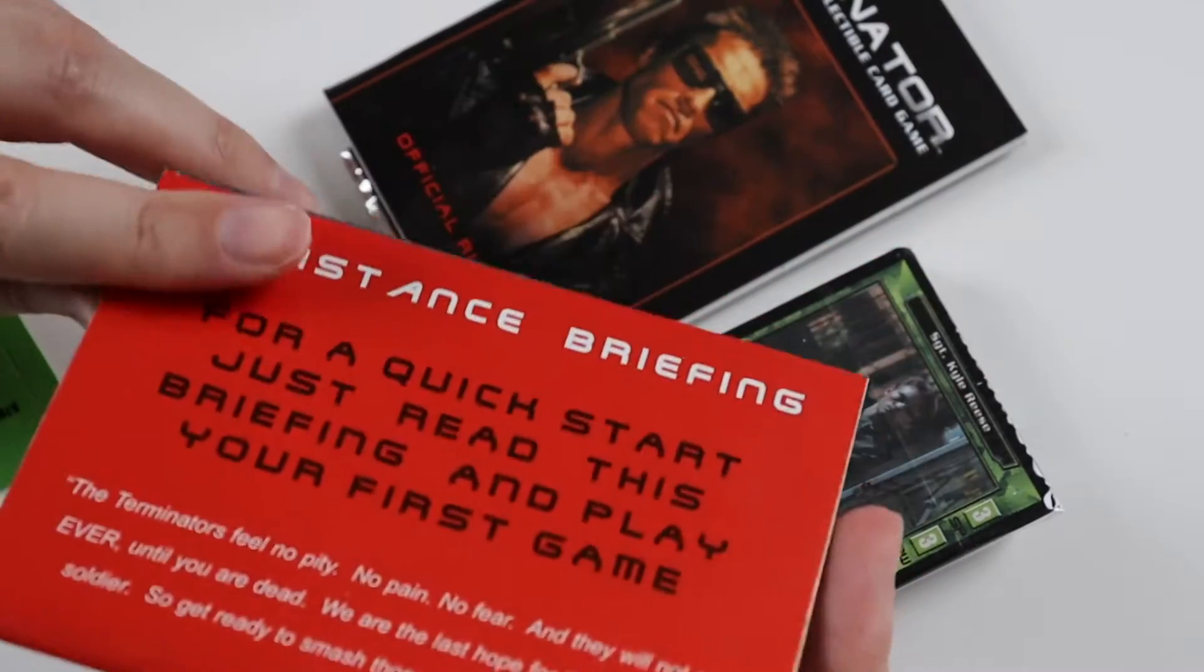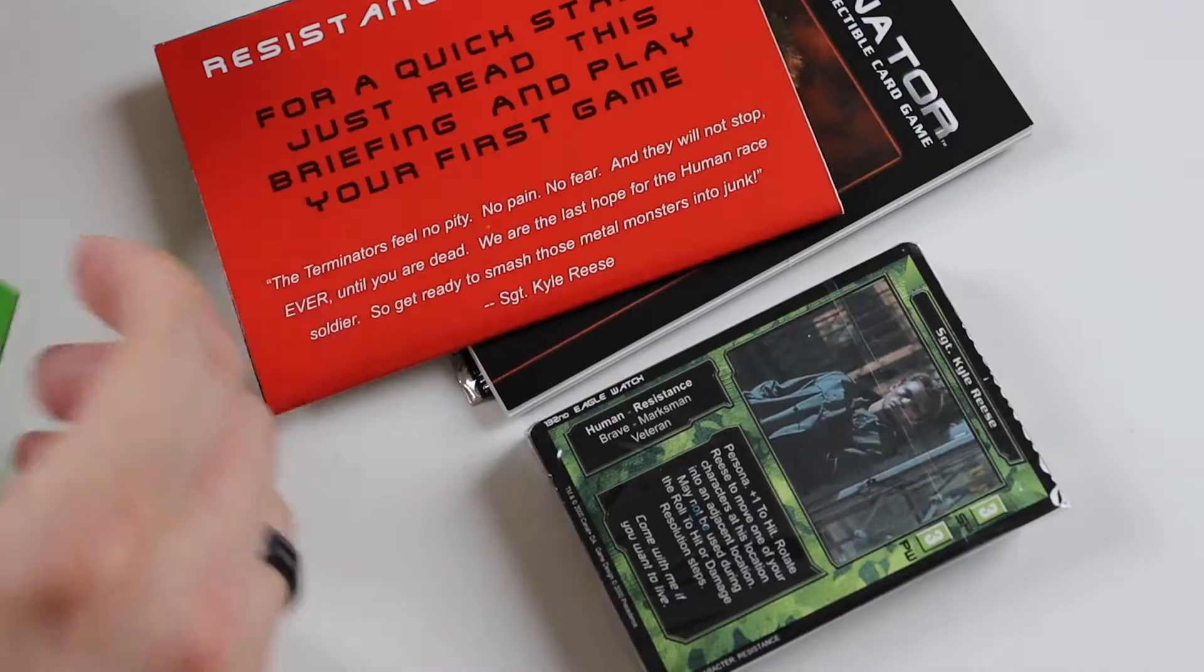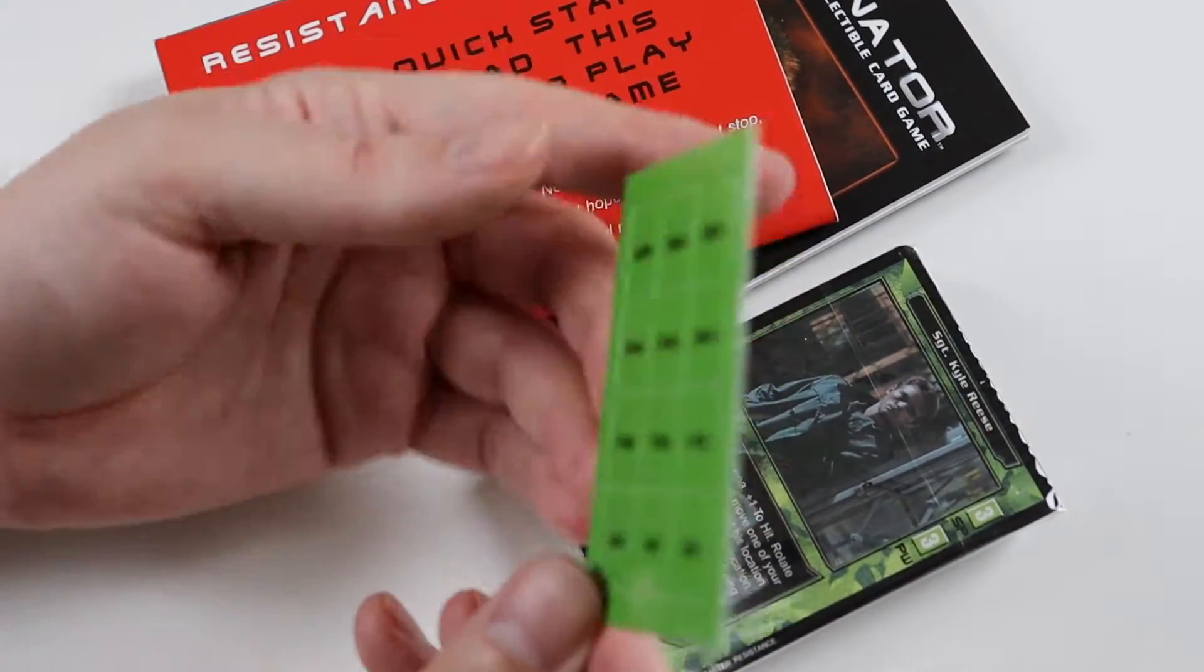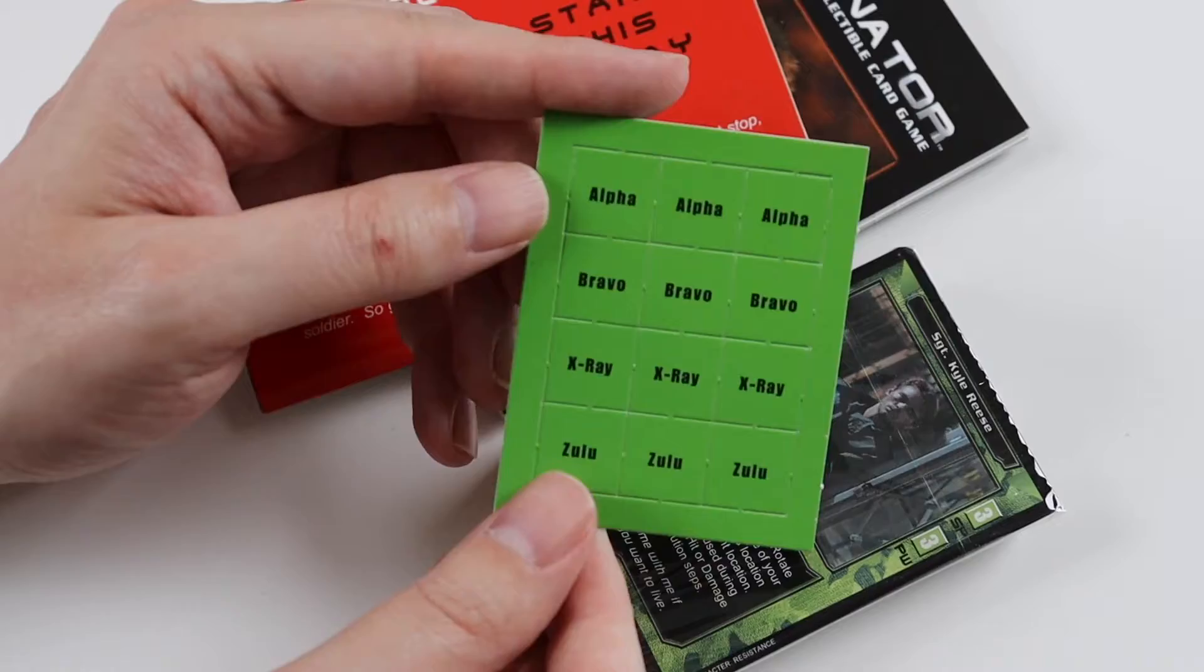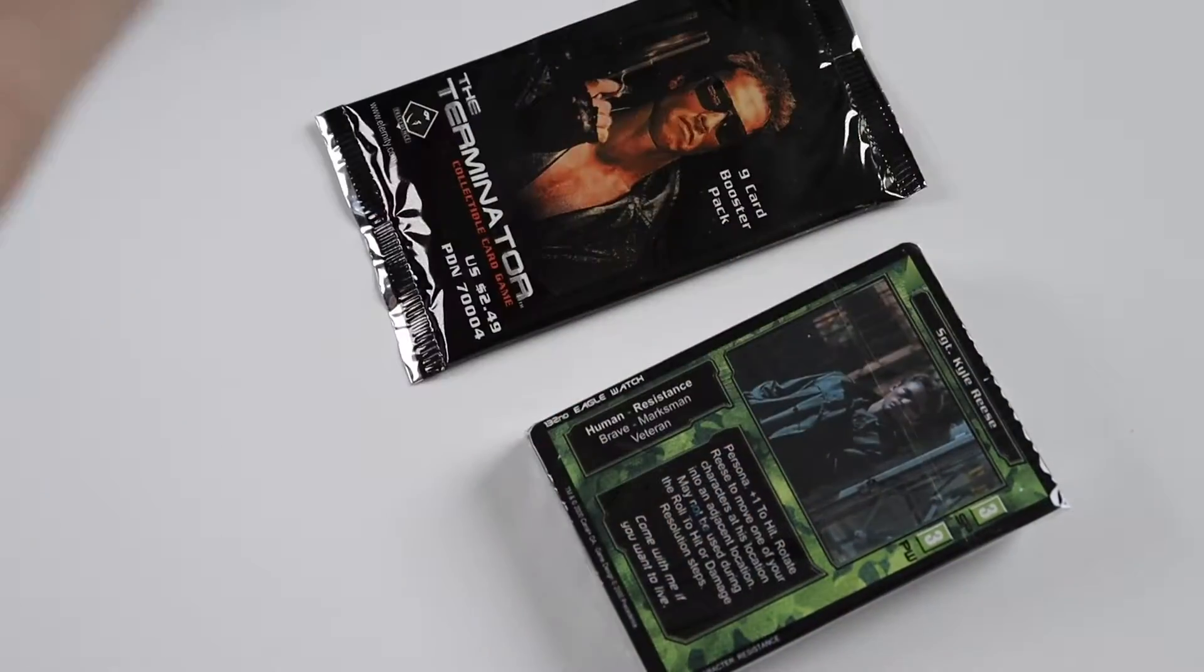That's the quick start rules sheet for the resistance. And same as Aliens Predator you get a little token sheet. And this one is new obviously.